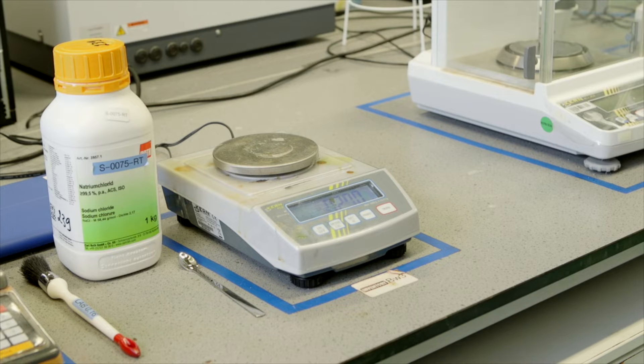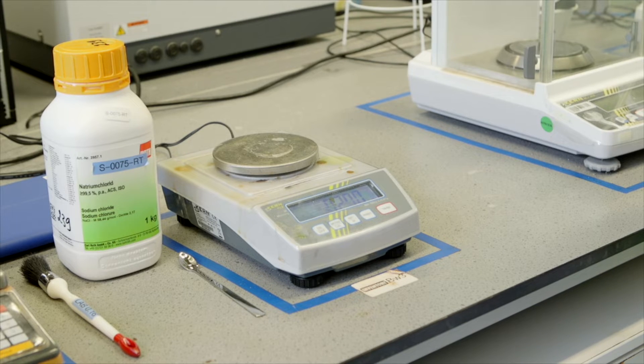The difference with the analytical balance is that general purpose balances are used for making reagents or weighing large quantities and weigh masses less precisely. An analytical balance is used for the precise weighing of samples and standards.